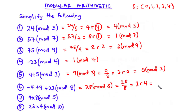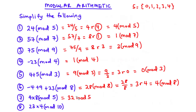Question 7: 4 × 8 modulo 5. We multiply 4 by 8 to get 32, so this becomes 32 modulo 5. Dividing 32 by 5: 5 times 6 is 30, remainder 2 (32 minus 30). Therefore 4 × 8 mod 5 equals 2.